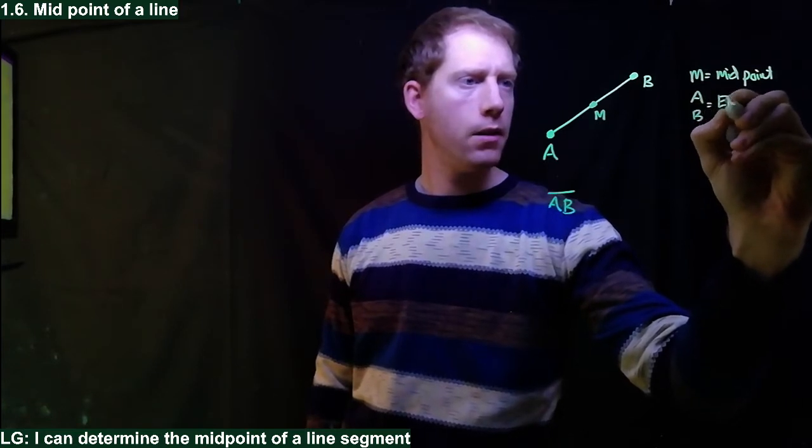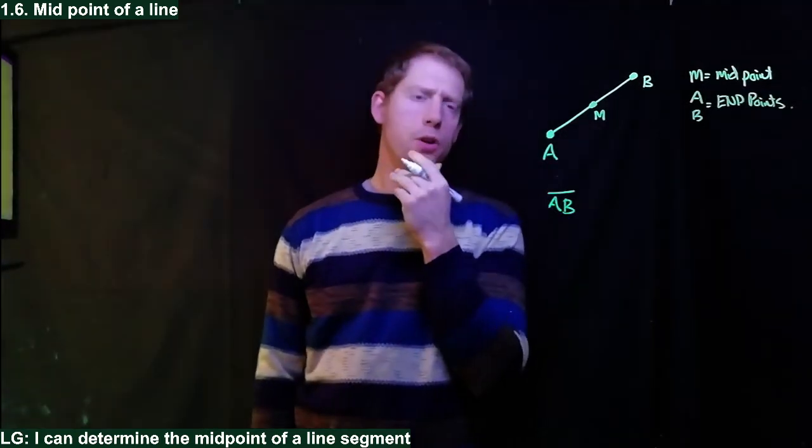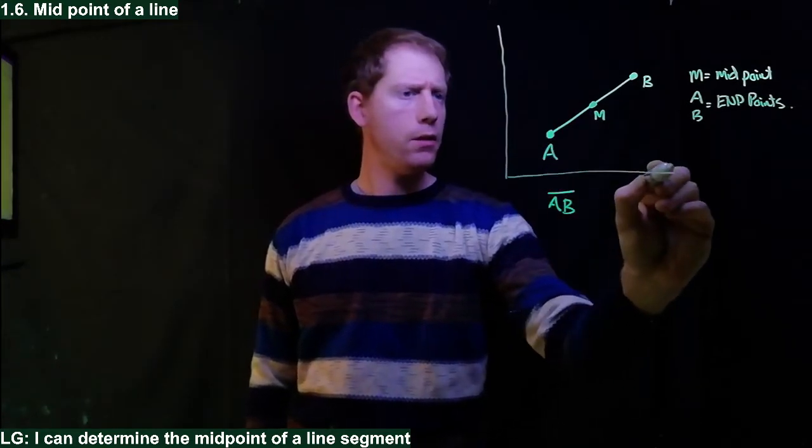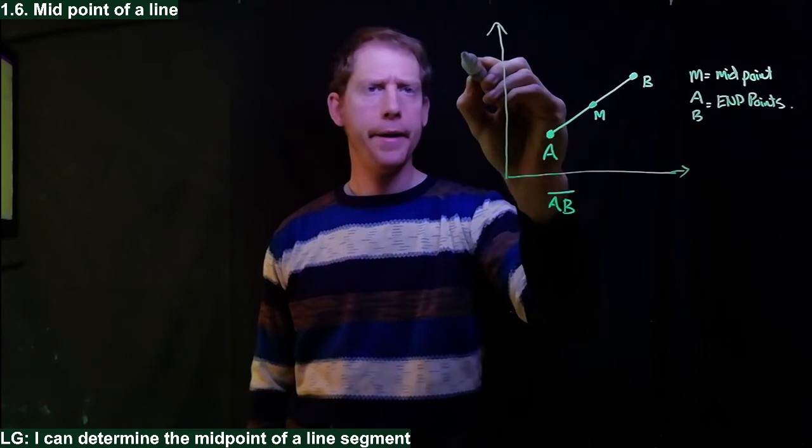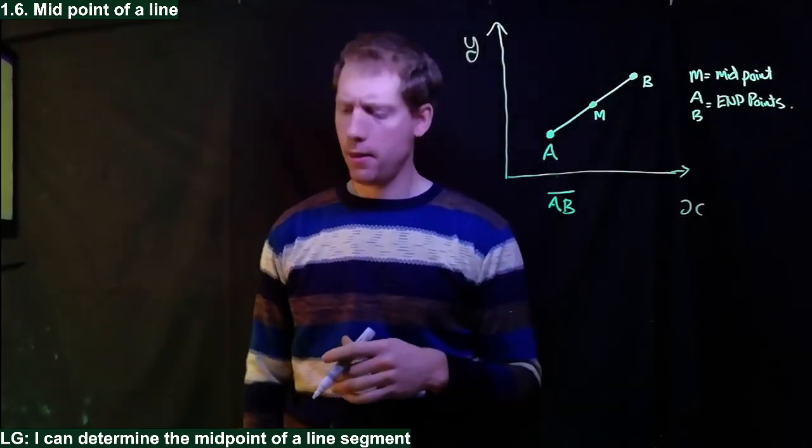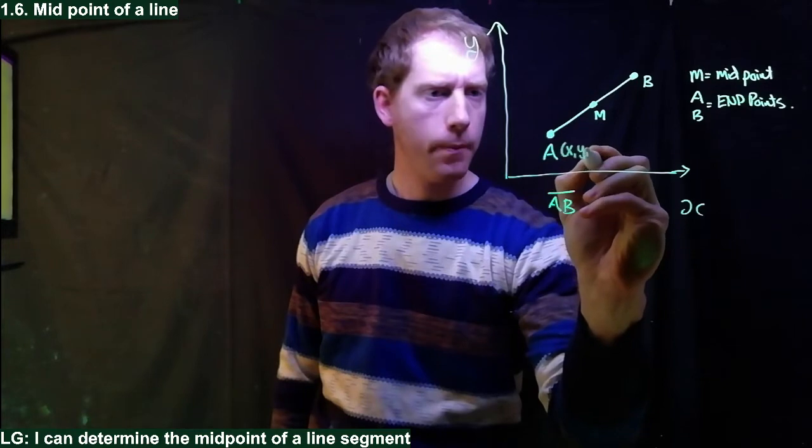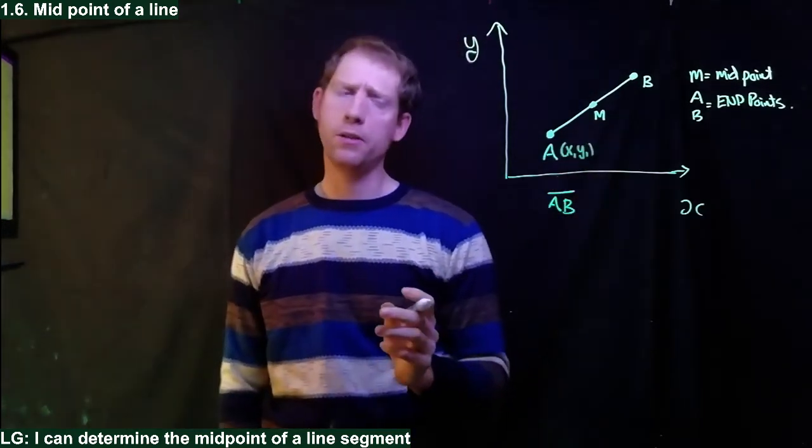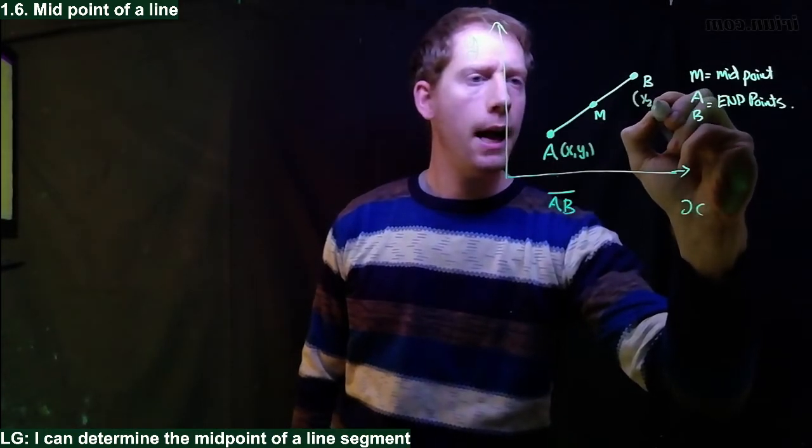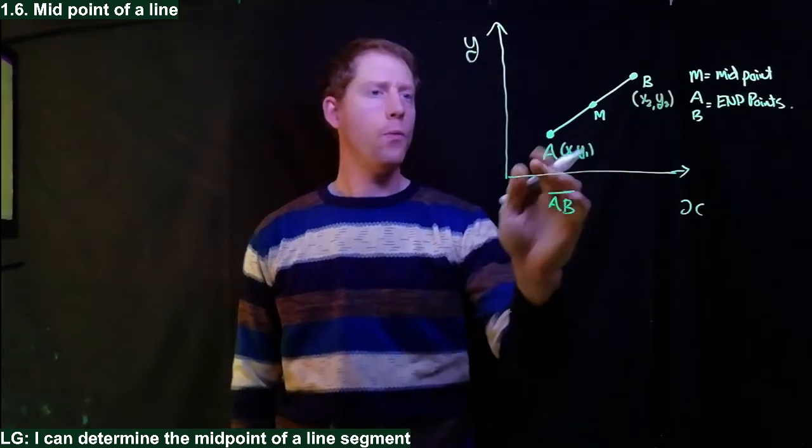Now how can we determine this? First let's think about this line segment on a graph. This is y and x, and each point you're given a location. This we'll call x1, y1 - that's the first endpoint of the line segment, and then B we have x2, y2.